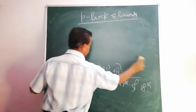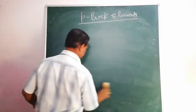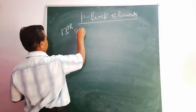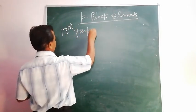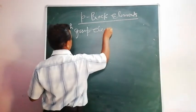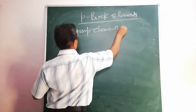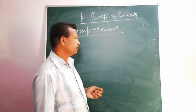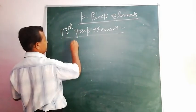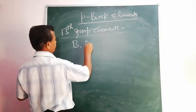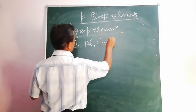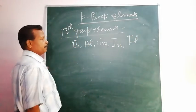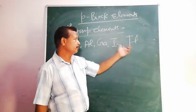Now we will discuss the 13th group elements. In general, in the thirteenth group, five elements are present: Boron, Aluminium, Gallium, Indium, and Thallium. These five elements are present as P-block elements.